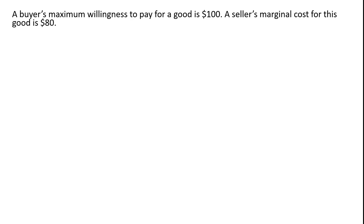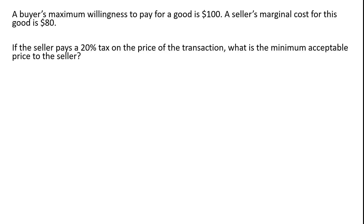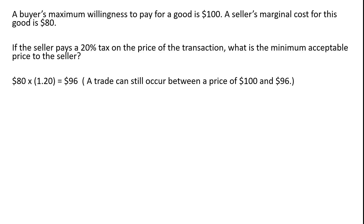Let's do a slightly different example. The buyer's maximum willingness to pay for a good is $100, and the seller's marginal cost for this good is $80. If the seller pays a 20% tax on the price of this transaction, what is the minimum acceptable price to the seller? We take the seller's marginal cost and increase it by 20%, multiplying $80 by 1.2, giving us $96. A trade can still occur, but only between a price of $100 and $96.